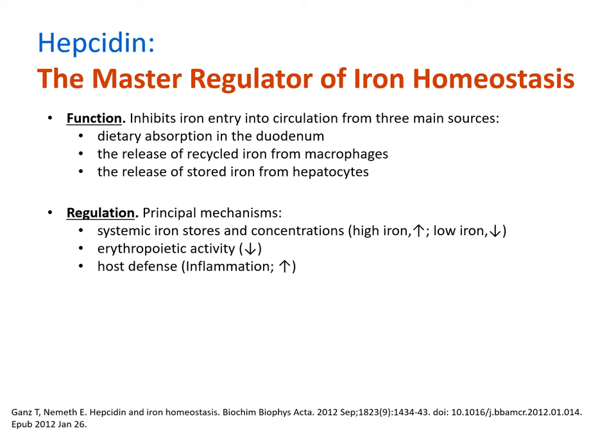Iron is essential for all life, including pathogenic organisms. As such, a mechanism was developed to starve invading pathogens from utilizing the body's iron in a process called nutritional immunity. When the body senses the presence of a pathogen, hepcidin is highly up-regulated, locking away the body's iron supply.